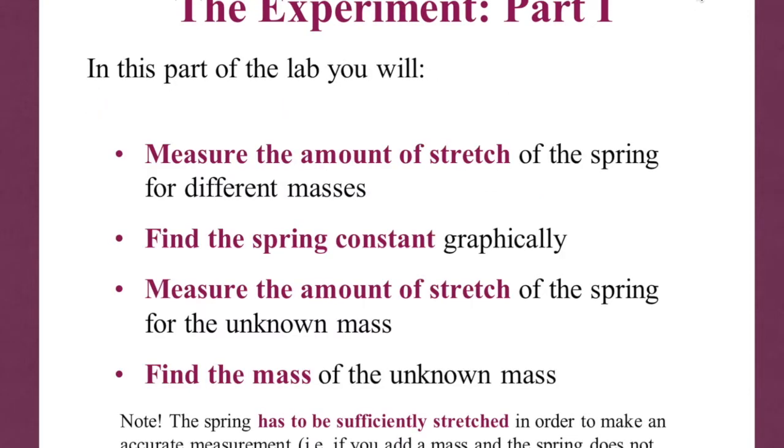The way this experiment is going to work is we're going to do two parts. The first is we're going to calibrate our measurements. So what we're going to do is we're going to hang different masses from a spring that's suspended vertically, and then we're going to measure how much the spring stretches. So we're going to basically have a known force and known displacements, and then we're going to use that to find the spring constant.